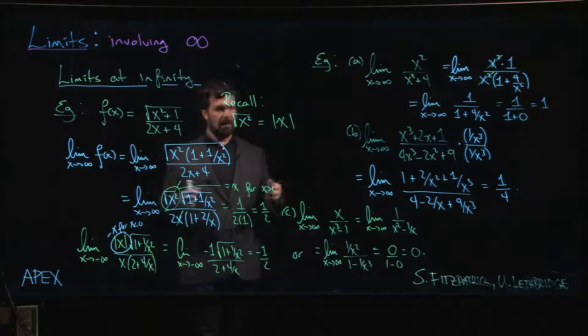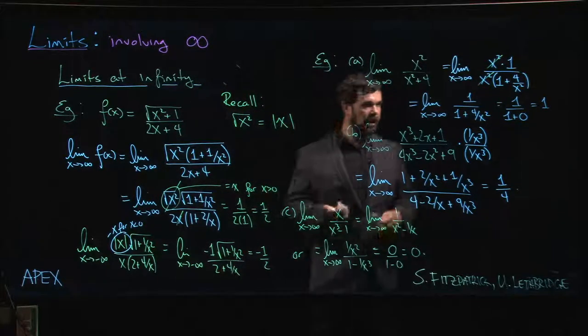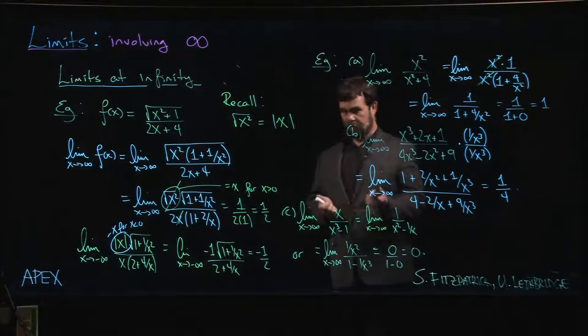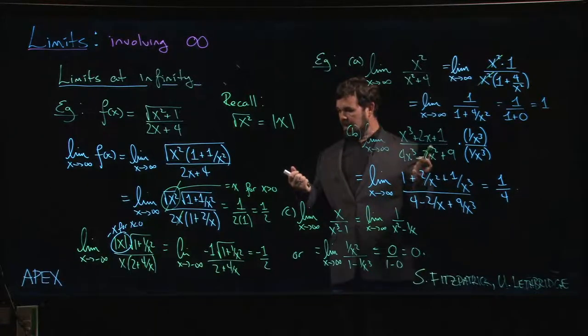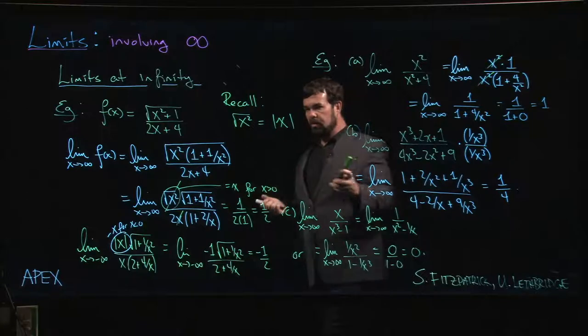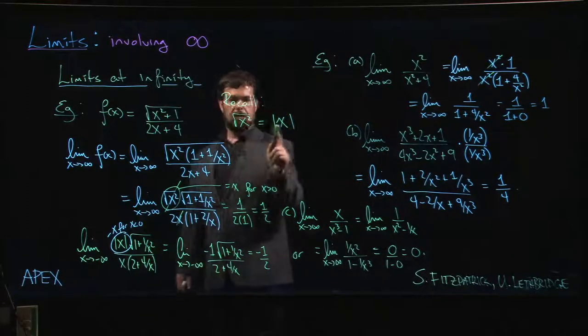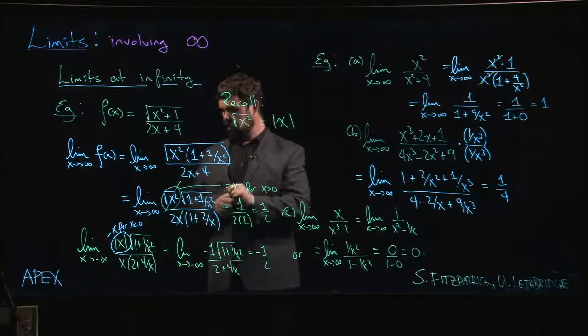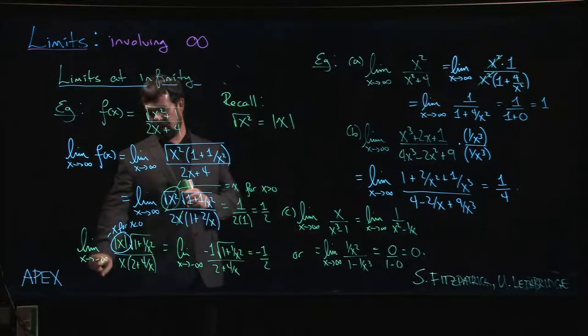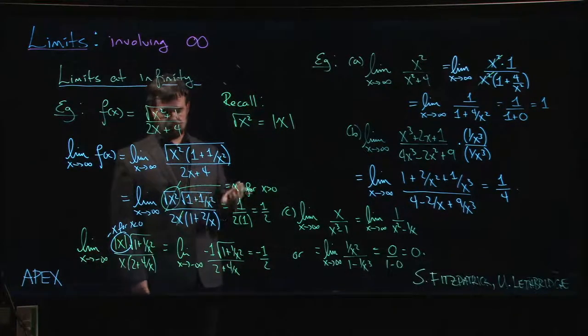So that one's a little bit trickier, right? It's more complicated than your basic rational function. You have to stop and think a little bit and be careful. But still, as long as you remember that the square root of a square is actually the absolute value, and then that matters if x is negative, it'll be okay. You'll still be able to sort it out.